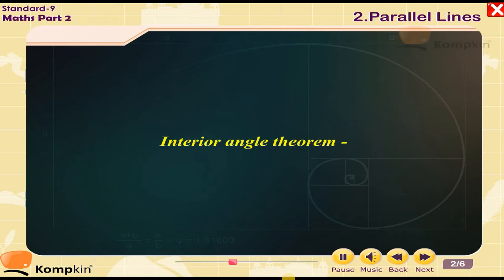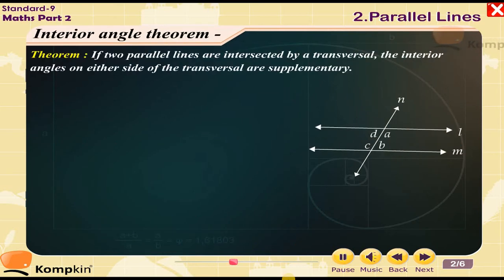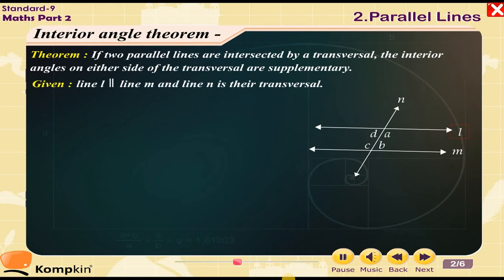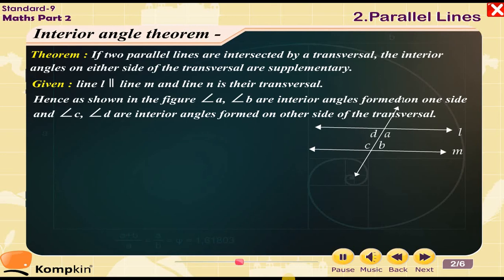Interior Angle Theorem. If two parallel lines are intersected by a transversal, the interior angles on either side of the transversal are supplementary. Given: Line L parallel to line M, and line N is their transversal. As shown in the figure, angle A and angle B are interior angles formed on one side, and angle C and angle D are interior angles formed on the other side of the transversal.